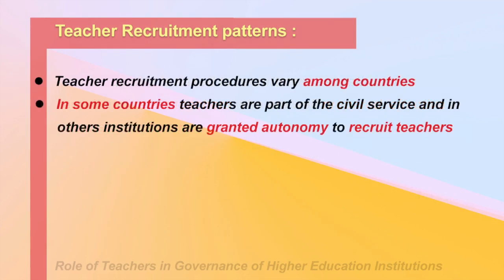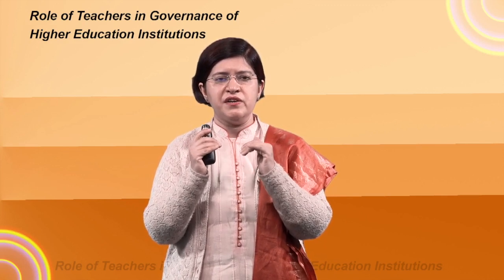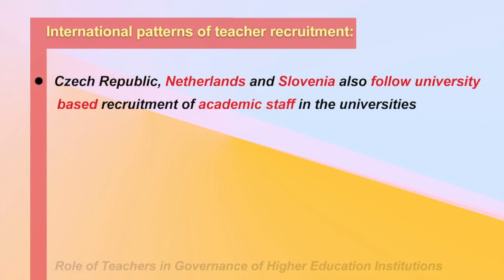Teacher recruitment procedures vary among countries. In some countries teachers are part of the civil service, while in others institutions are granted autonomy to recruit teachers. In the United Kingdom and USA, institutions enjoy the autonomy to recruit university teachers. In the UK, higher education institutions have primary responsibility for recruitment, retention, and development of their own staff, and each institution decides on the number of academic staff and the qualifications and criteria involved. The Czech Republic, Netherlands, and Slovenia also follow university-based recruitment of academic staff.